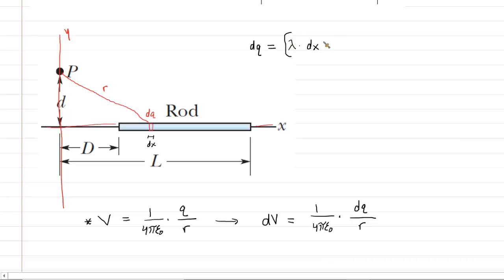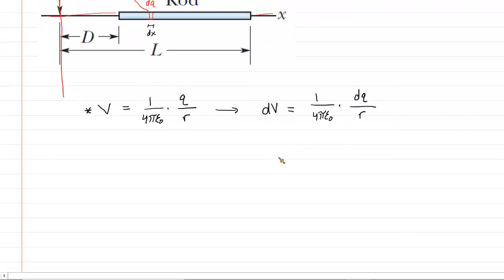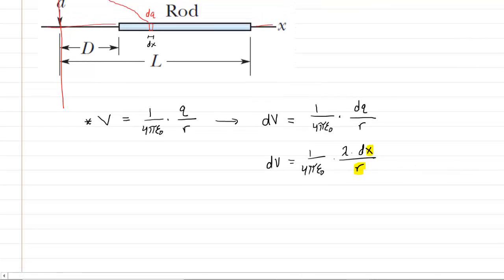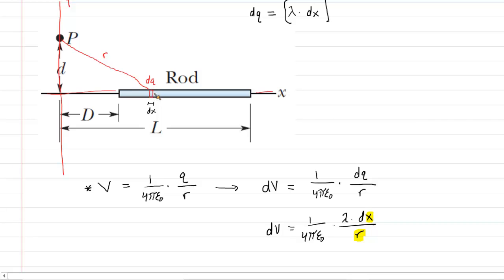Now, dq can be substituted with the expression lambda times dx. So we replace dq with lambda times dx, and that is divided by r. The problem right now is we have two variables: x is a variable because it changes depending on where we locate the differential element along the rod, and r will change in turn because as we change the location of the differential element, we change the length r as well.